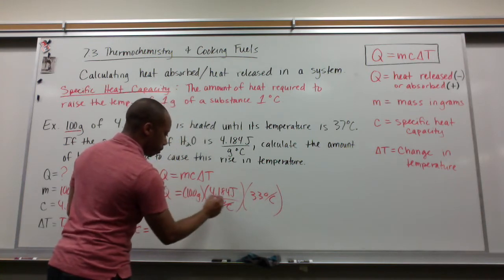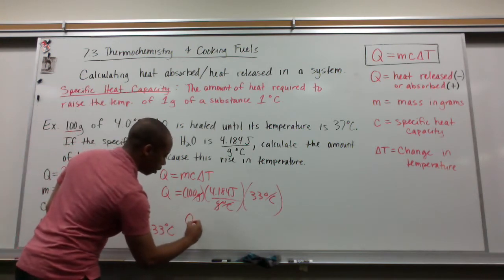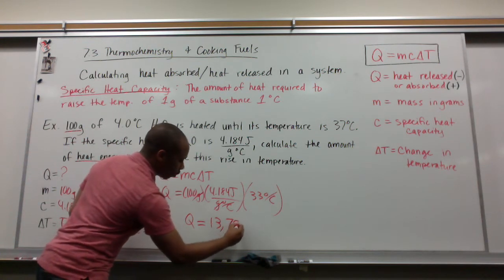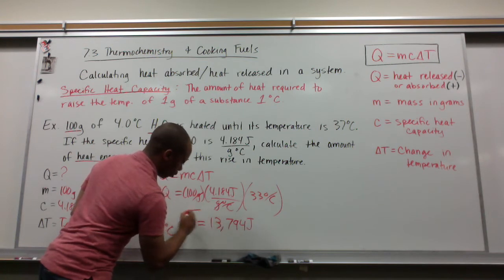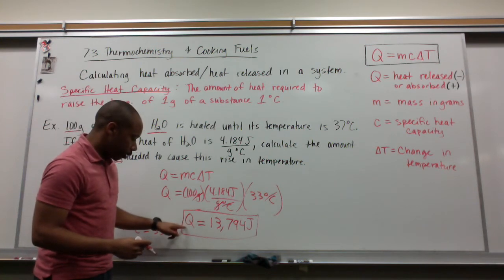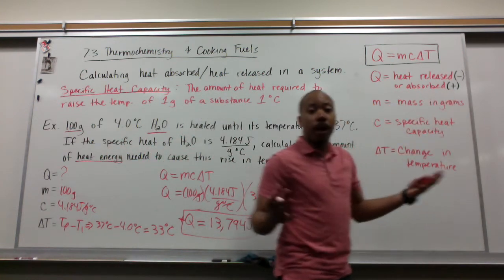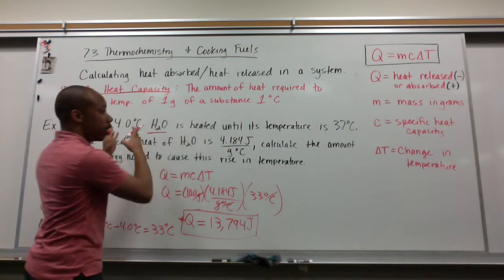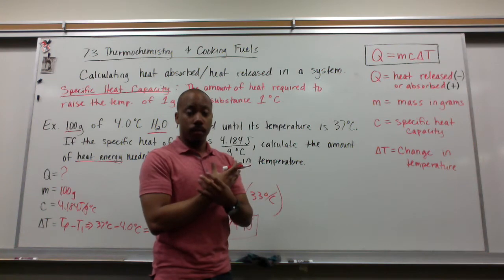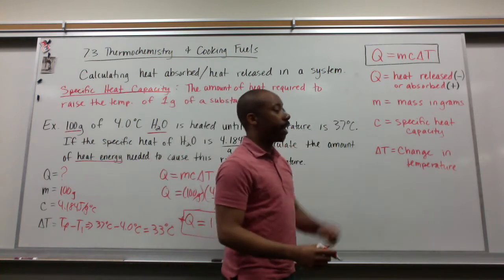My degrees Celsius cancel here. My grams cancel there. I'm left with joules, which is a unit of energy. That's what I want. Heat is equal to 13,794 joules. This is a positive Q here because heat was absorbed by the water. The water went from 4 degrees Celsius to 37 degrees Celsius. It increased in temperature. Heat energy was absorbed by the water. If it got colder, then heat energy would have been lost by the water and my value would have been a negative value.